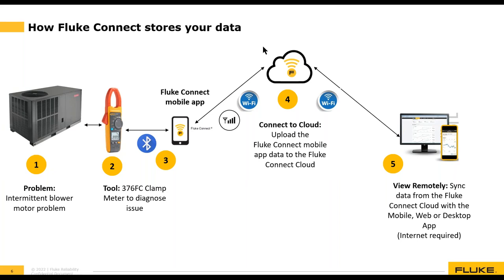Here's an overall flow of how data is stored and moved through various systems in a typical troubleshooting scenario. Let's say you've got an intermittent blower motor problem with a rooftop HVAC package unit. In step one you've grabbed your 376 FC clamp meter to help diagnose the issue and connect it to the blower motor. In step three, the 376 FC clamp meter communicates its readings to the Fluke Connect mobile app via Bluetooth. In step four, the mobile app uploads the readings to the Fluke Connect cloud where they are permanently stored.